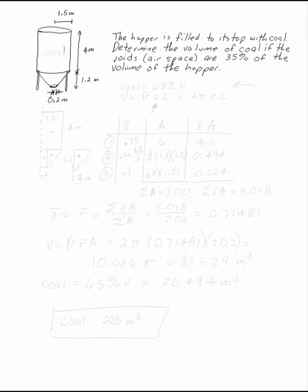The hopper is filled up to its very tip top with coal. Determine the volume of the coal if the voids in the hopper are 35% of the volume. So the coal is going to be only 65% of the volume. What we need to do is find the volume.